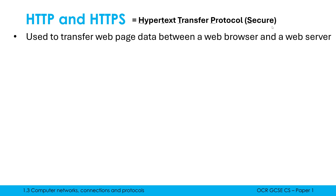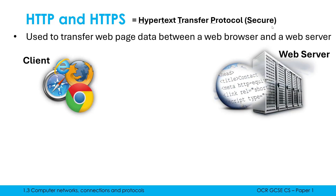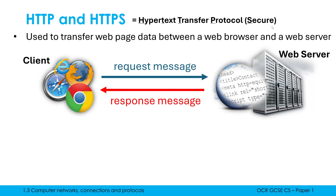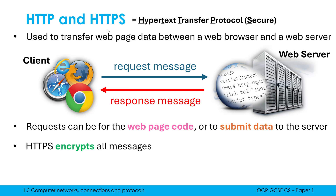Both HTTP and HTTPS are used for transferring web page data between a web browser and a web server. The web browser acts as the client — it sends a request message to the web server, the web server processes this message and responds. The request will most often be for web page code, but we could also be requesting to send data to a server — for example, if I'm logging in to a server, I'm giving it data. The key difference between these two versions is that HTTPS encrypts all messages.